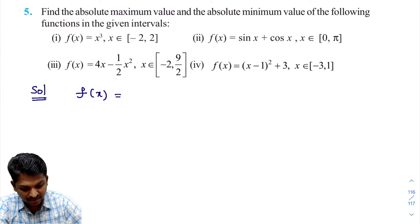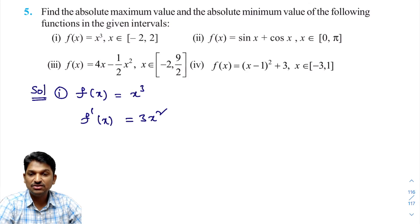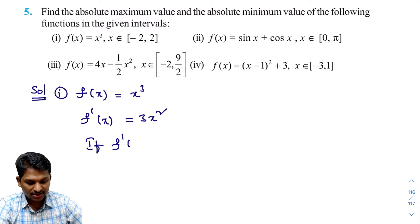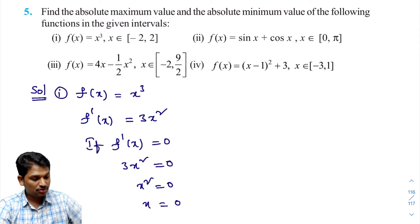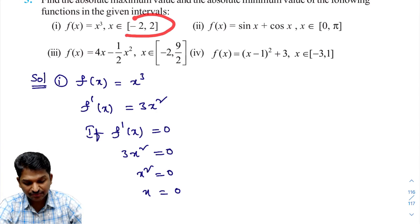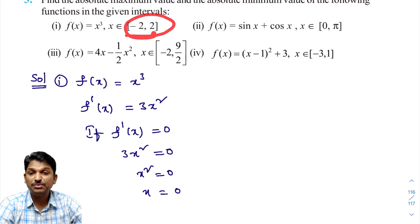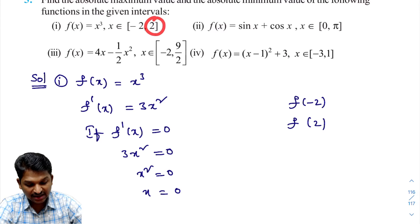First bit: f(x) = x³. Calculate f'(x): the derivative of x³ is 3x². Setting f'(x) = 0 gives 3x² = 0, so x² = 0, meaning x = 0. We identified the critical point x = 0. Since the function is defined on the closed interval [-2, 2], we calculate f(-2), f(2), and f(0).